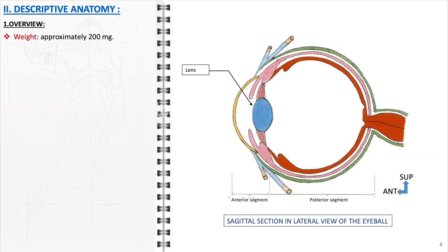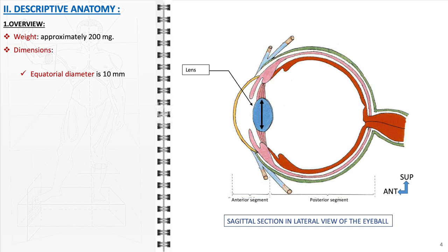Concerning the descriptive anatomy of the lens, we will begin with a detailed overview of the lens's weight, dimensions, and other key physical and optical characteristics. The lens weighs approximately 200 mg, highlighting its lightweight nature. The dimensions of the lens are critical in understanding its structure and function within the eye. The lens has an equatorial diameter of 10 millimeters. This measurement refers to the width of the lens at its widest part, which is around the equator or middle of the lens. This width is vital for the overall size and focusing power of the lens.